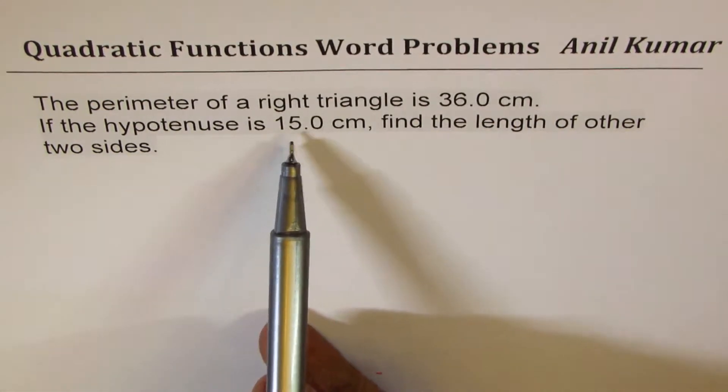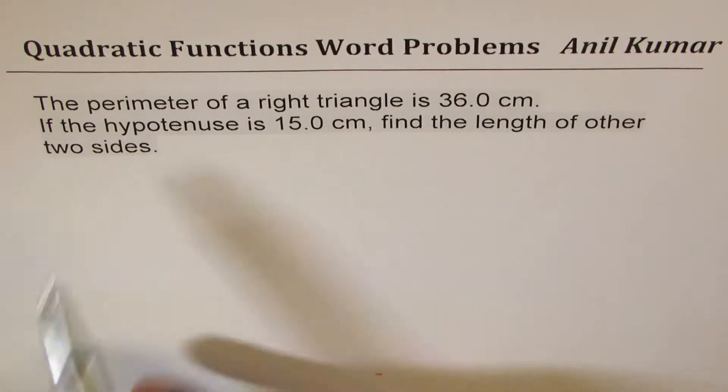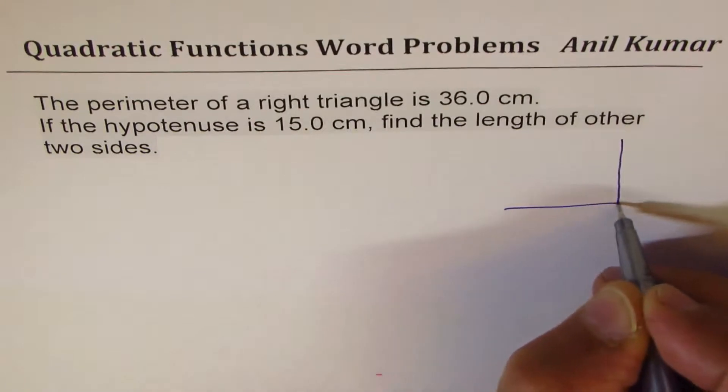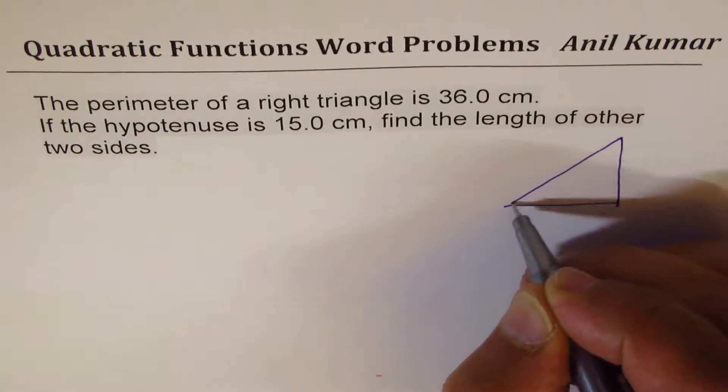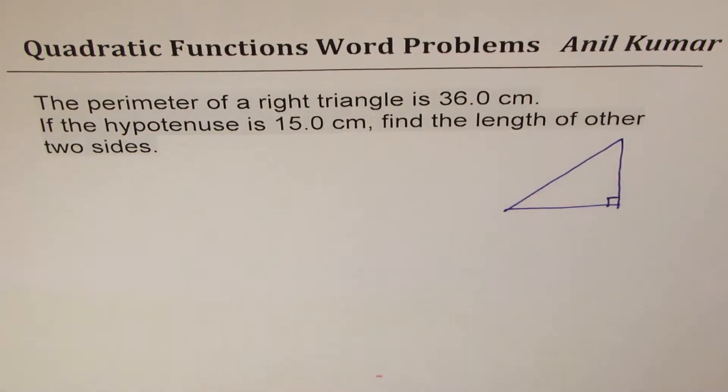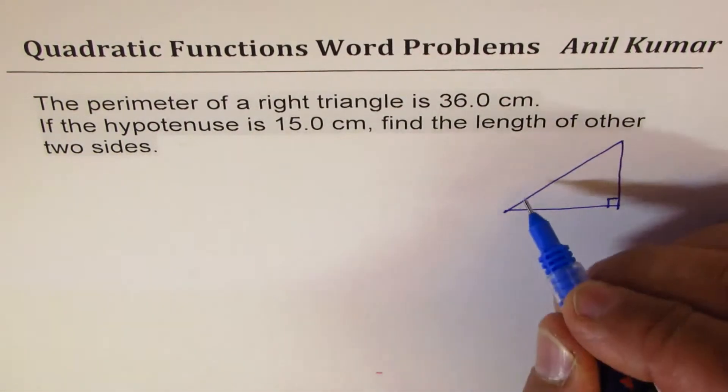The hypotenuse is 15 centimeters. Find the length of other two sides. So in this particular case we are given perimeter, so let's draw one right triangle here. Let us say these two sides are perpendicular, we are given hypotenuse of 15 centimeters.